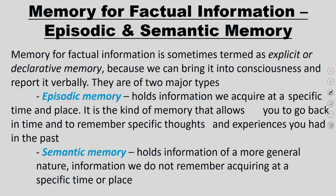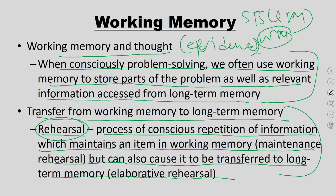Now, memory for factual information — episodic and semantic memory. Long-term memory is divided into two parts: the conscious part and the unconscious part. We have explicit memory and implicit memory. Explicit long-term memory is called declarative and implicit long-term memory is called procedural.